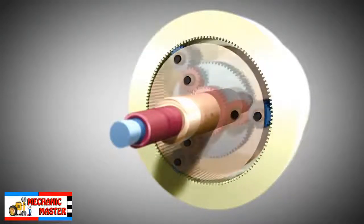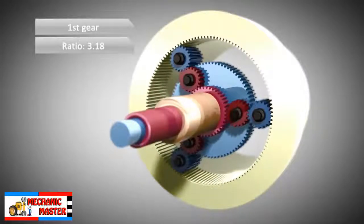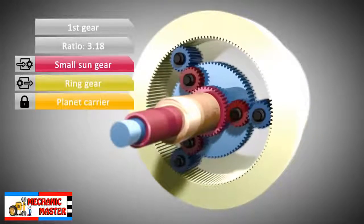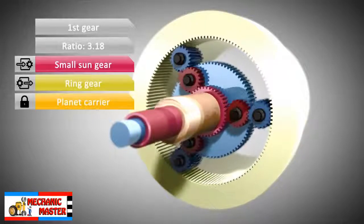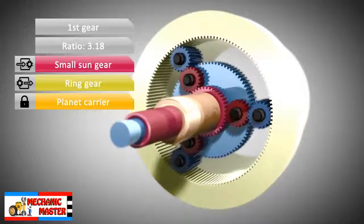In first gear, the small sun is driven by the torque converter, which is driven by the engine. The planet carrier is held still by a multi-plate brake or one-way clutch, so it cannot rotate. The ring gear is connected to the output and drives the wheels of the car.